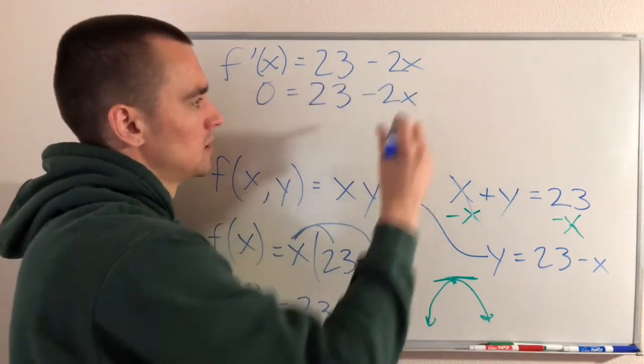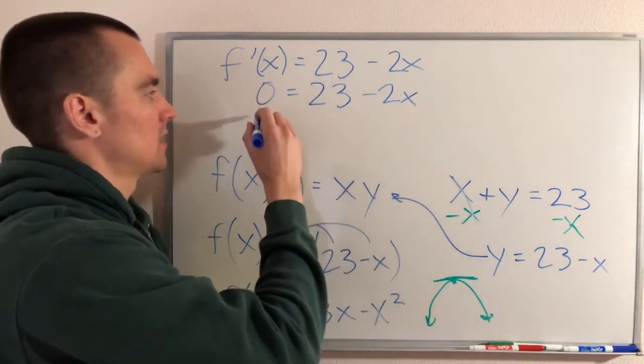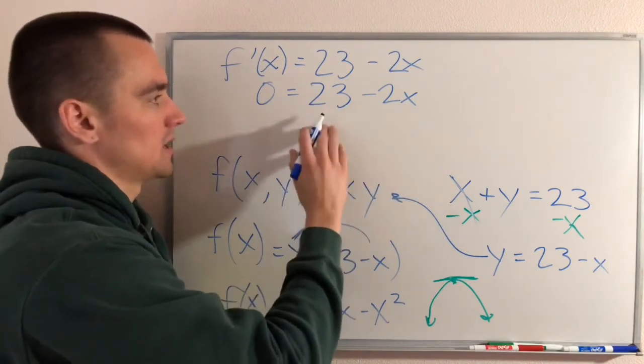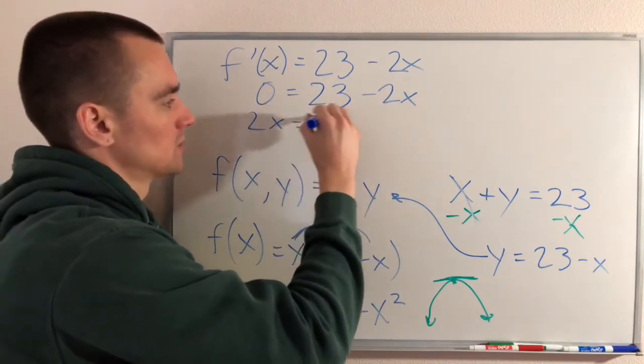So if we add 2X to both sides, it'll cancel over here and we'll just have 2X equals 23. Divide both sides by 2 gives us X equals 23 over 2.